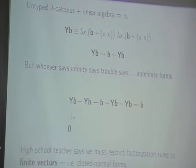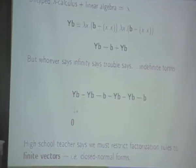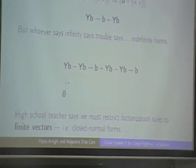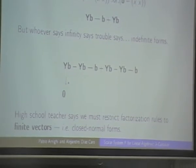What they say in the entire lambda calculus is they have to restrict the factorization rules and other rules to closed normal terms, because it's the only way to prove that it is infinite doesn't become infinite.